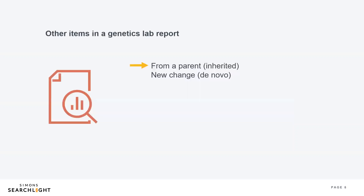Finally, we will point out the interpretation, where information is provided about what this change might mean. Here it states that the loss of this genetic material causes a syndrome called 16P11.2 microdeletion syndrome. There are many other items that can be included on a lab report, like if the change was passed on from a parent or if it is a new change that is not seen in either parent.